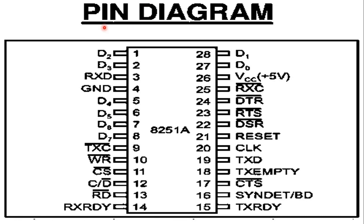This is the pin diagram of the 8251 USART. The 8251 is a 28-pin DIP IC, compatible with 8085, 8086, 8088, and 8748 systems. Pin number 11 is the chip select signal (CS bar). When this signal goes low, the 8251 is selected by the microprocessor for communication. It is usually connected to a decoded address bus.